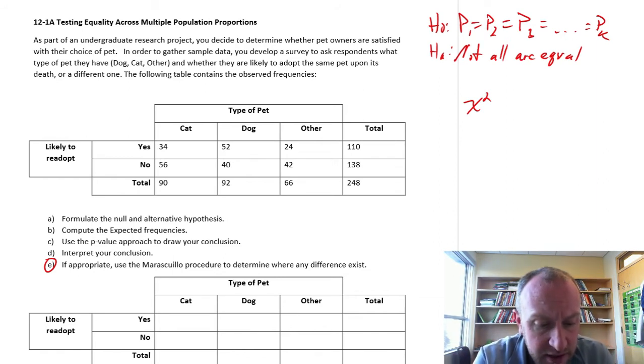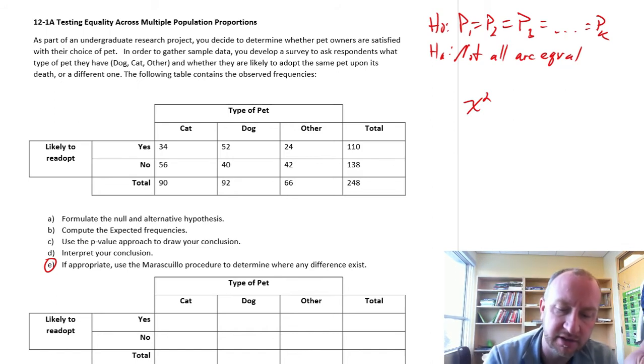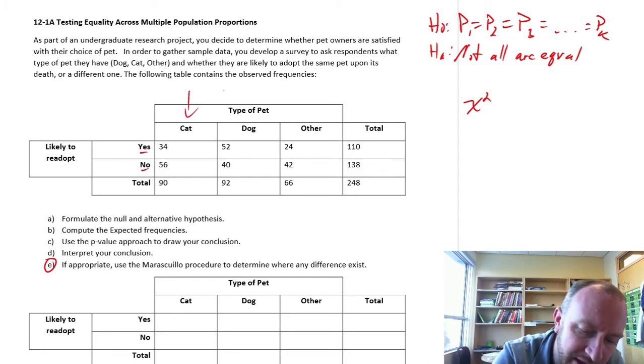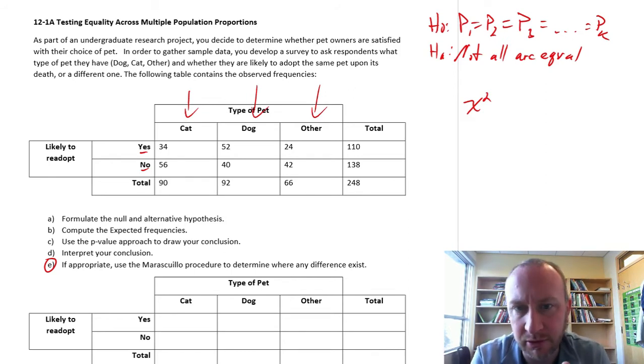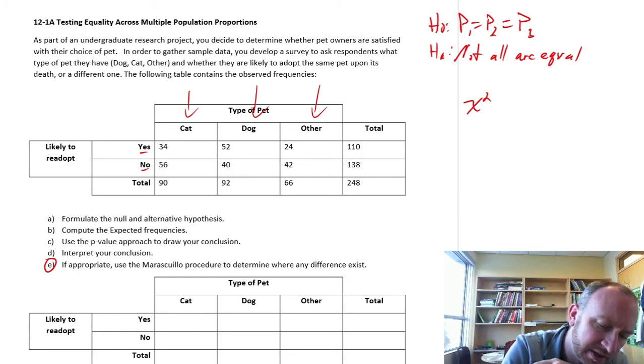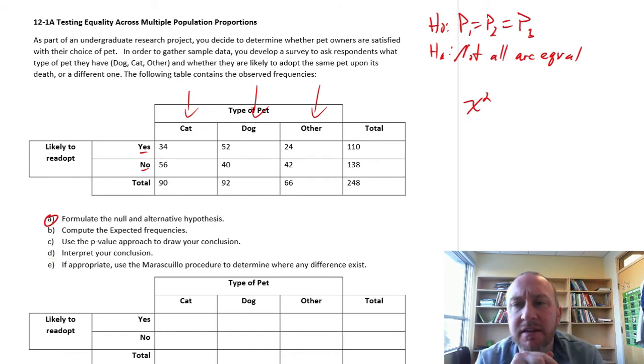So for this exercise, here we're looking at a research project. We decide to determine whether pet owners are satisfied with their choice of pets. So we do a survey, we gather some data, we ask students, we ask our classmates, our pet owners, what kind of pet do you have? A dog or a cat or something else? And if you were likely to adopt the same animal when yours dies. So when your dog dies, are you going to adopt another dog or are you going to maybe adopt something else, a different species of animal? So we have here two possible responses. We have yes or we have no and we have three possible pet categories. So cat, dog or other. So this is going to be a test on three population proportions. So P1 equals P2 equals P3 and again not all of these are equal. So there's part A done. We've got our null and alternative hypotheses formulated.